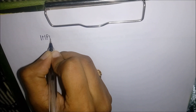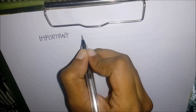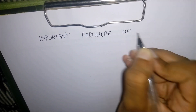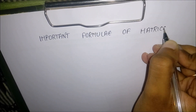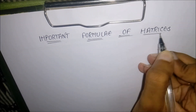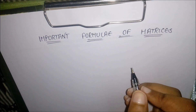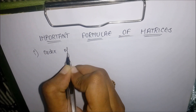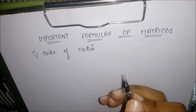Hi everyone, welcome to my channel. Today's video is about important concepts and basic definitions of matrices. A matrix is nothing but a rectangular arrangement of numbers in rows and columns. The first topic is about the order of a matrix.